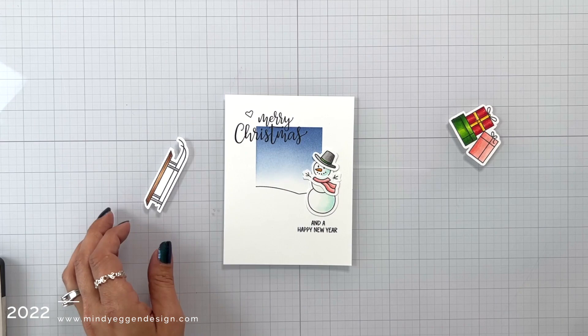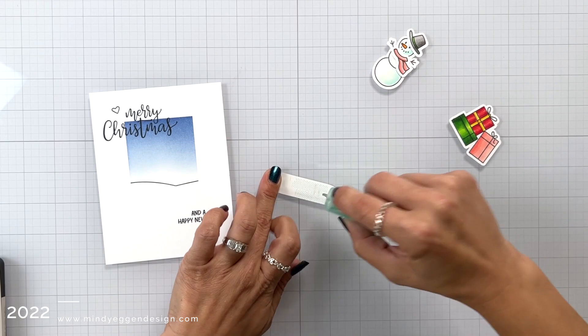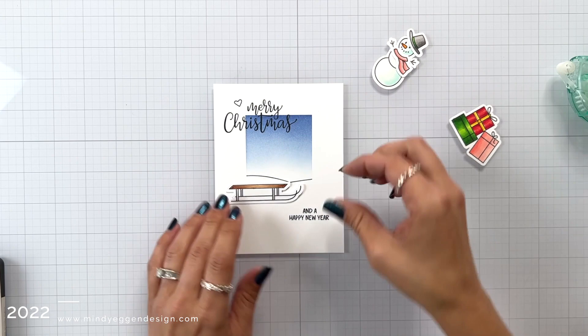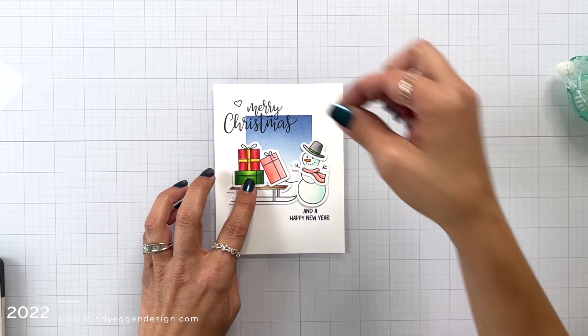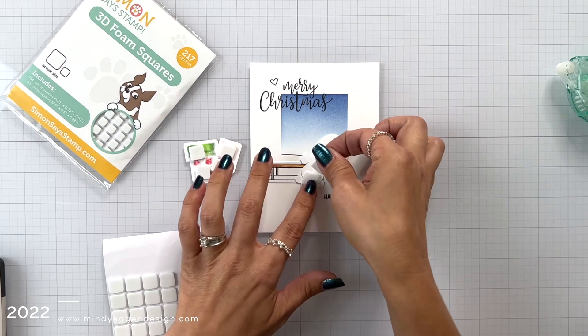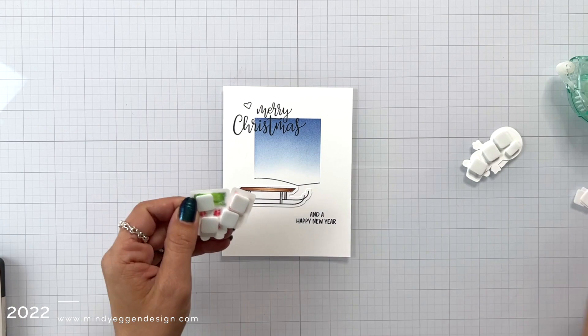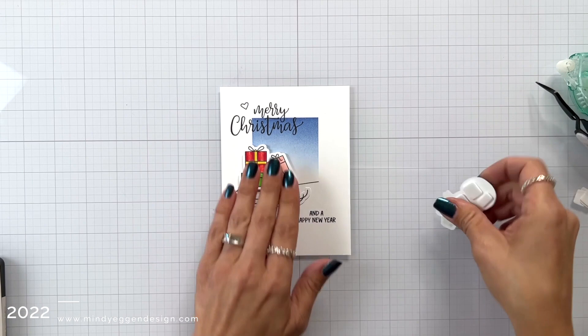Now I can finish the assembly of my card. I'm adding a dot runner behind the sled. That's going to be the image furthest in the background. So I'll add that to the back and attach that down. And for my snowman and my presents, I am going to add some foam squares behind that. I wanted to add a little bit of dimension to these. So I'm using the Simon Says Stamp 3D Foam Squares, and then once I remove the backing, I can use my tweezers to help align this. I almost always use my tweezers for this because it keeps my fingers out of the way, and I can get a really good visual of where they're sitting on my card.